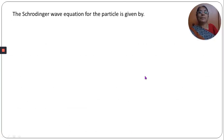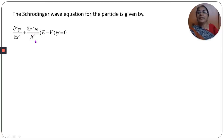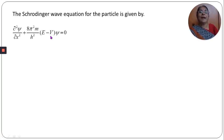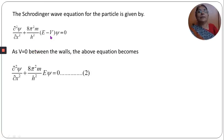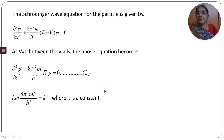The Schrödinger wave equation for the particle is given by ∂²ψ/∂x² + (8π²m/h²)(E − V)ψ = 0. Here E − V gives the kinetic energy. For a free particle inside the box, V becomes zero, so the equation becomes ∂²ψ/∂x² + (8π²mE/h²)ψ = 0. Let this be equation number two. We substitute 8π²mE/h² = k², where k is a constant, giving: ∂²ψ/∂x² + k²ψ = 0.